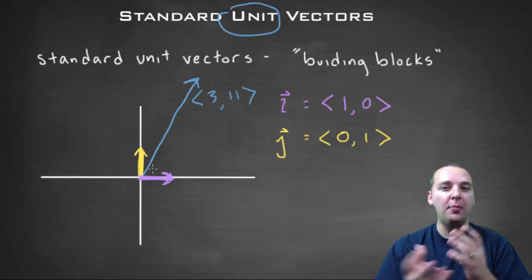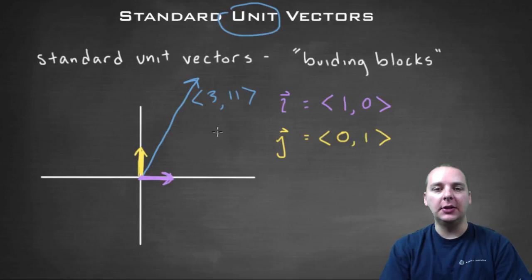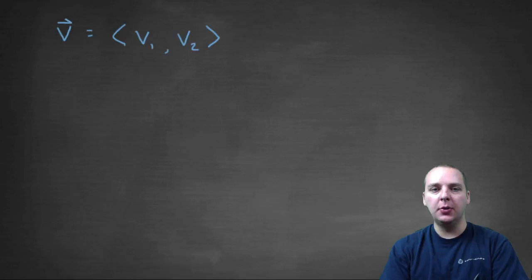You can take a combination of copies of i and copies of j, and combine them to get these vectors here. So let me show you how this works.